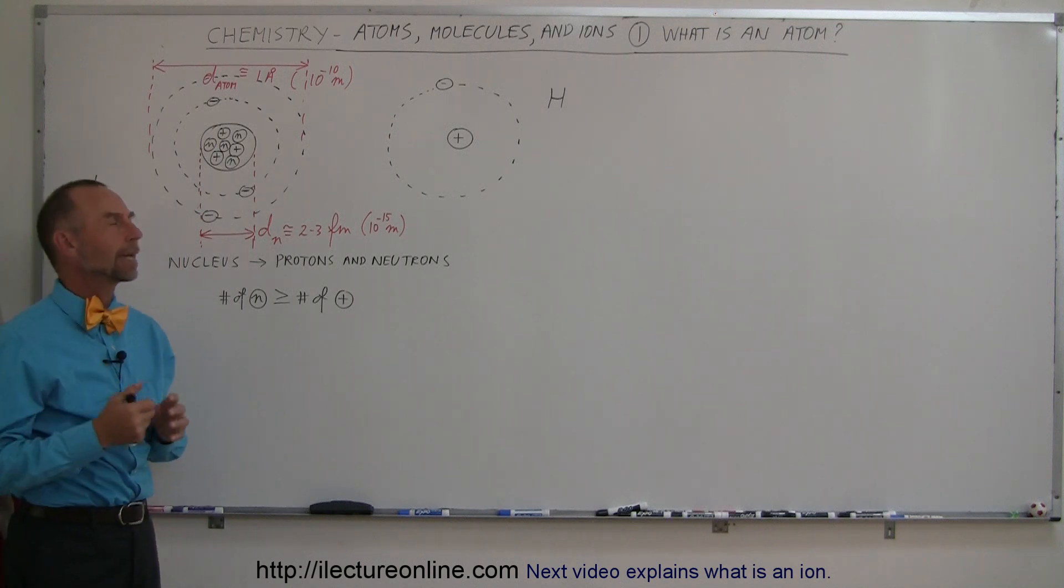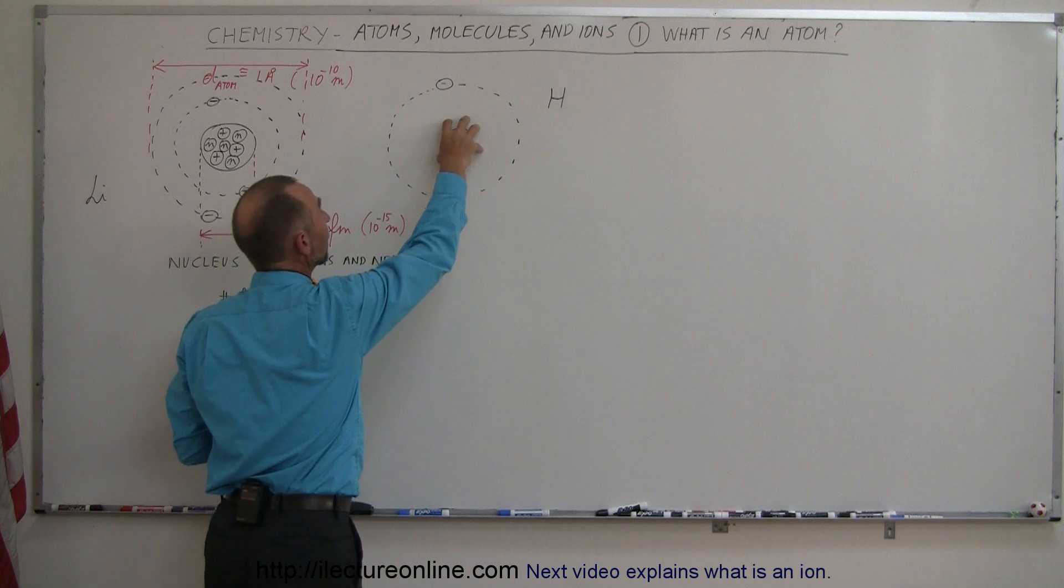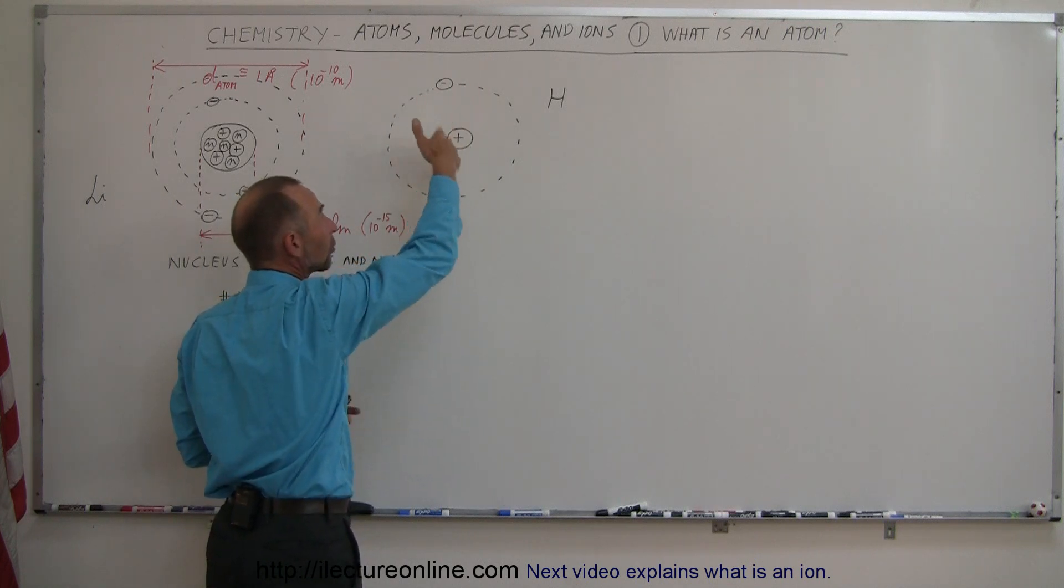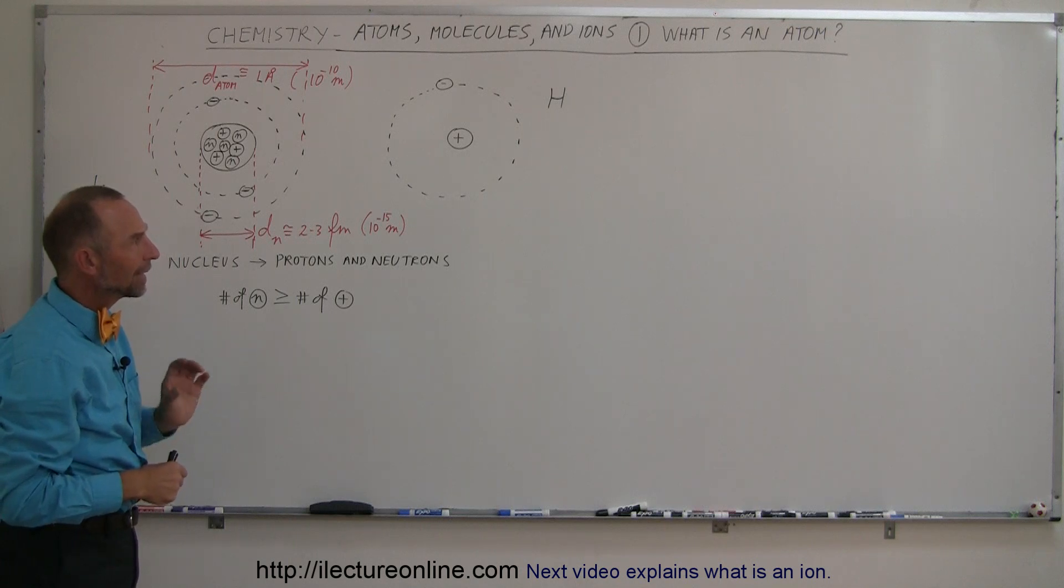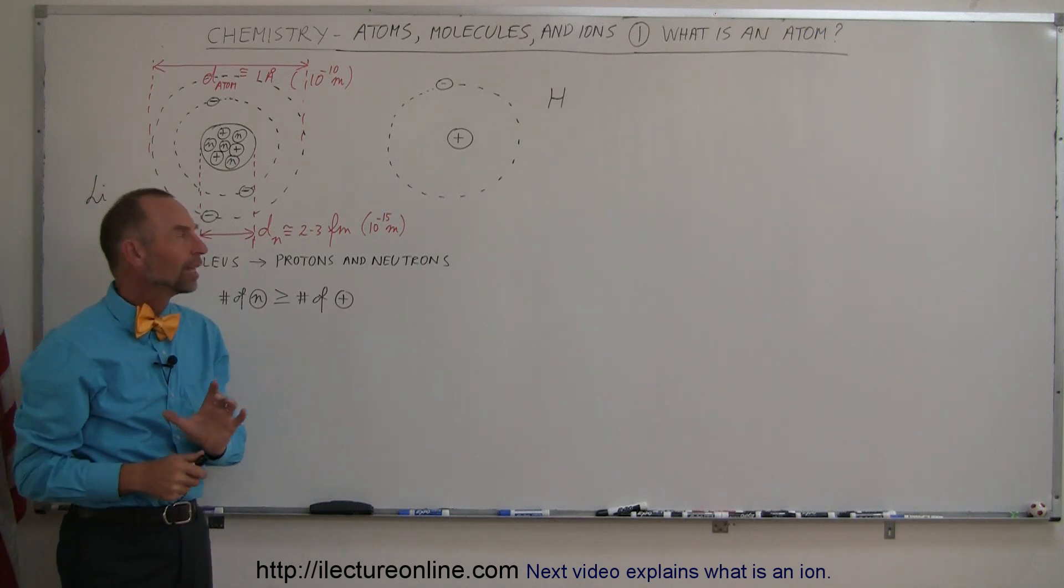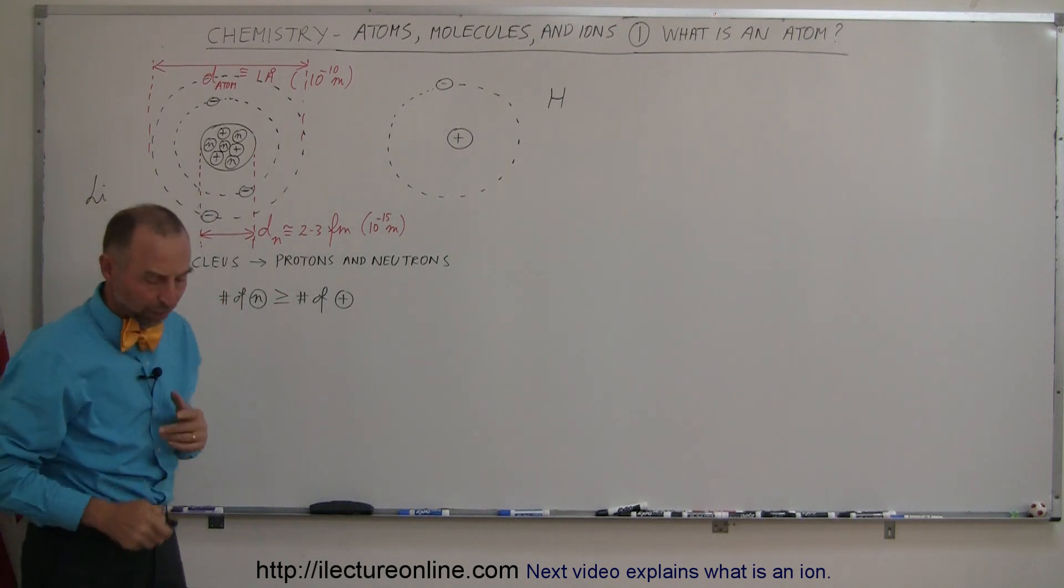So why do you need even electrons to make an atom? For one thing, naturally, since you have a proton there, it's going to attract negative charges, so there's a natural attraction between the nucleus and the electrons. But the electrons have a very special purpose in an atom. They actually give the atom its shape and its solidity.